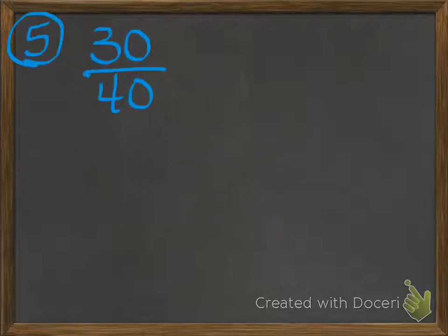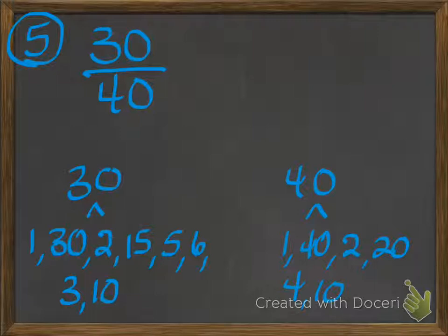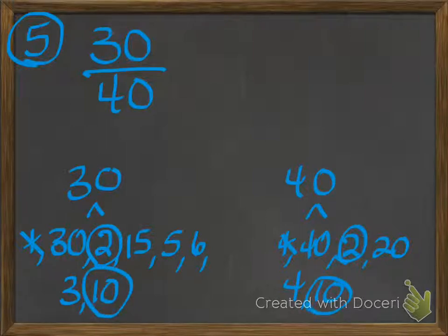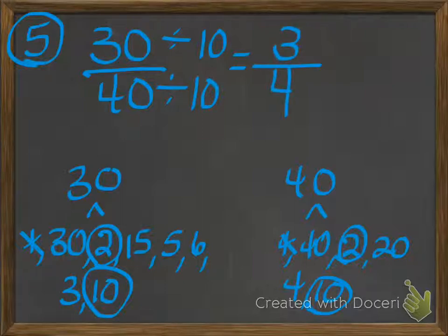Number 5 — it's your turn! 30 fortieths. Can you break that down into its simplest form? You should have something that looks like this: the factors of 30 and the factors of 40, with the ones that are common between them circled — not 1, but all the others they share. They shared 2 and 10. I'm going to choose the biggest of those: the greatest, which is 10. I'm going to divide both 30 and 40 by 10. Whatever I do to the top, I've got to do to the bottom. 30 divided by 10 is 3, and 40 divided by 10 is 4. That is the simplest fraction — you should have gotten 3 fourths.